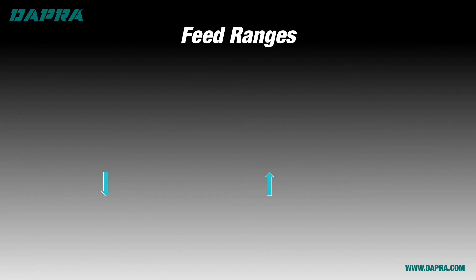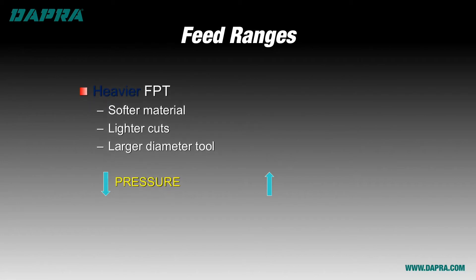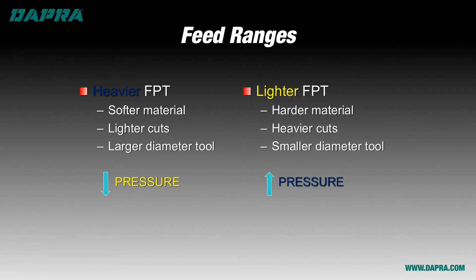Taking the same approach regarding feed: you may be able to choose the higher end of the recommended feed range if you're cutting softer material, taking a lighter depth or width of cut, or using a stronger, larger diameter cutting tool — in any of these cases there is less stress on the cutting tool. On the other hand, you may need the lighter end of the feed range when cutting harder material, taking heavier cuts, or using a smaller diameter tool, which is weaker. In those cases, increased pressure on the cutting tool makes the lower end of the recommended feed range your best choice.